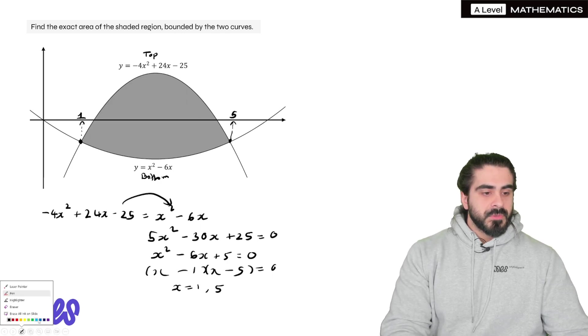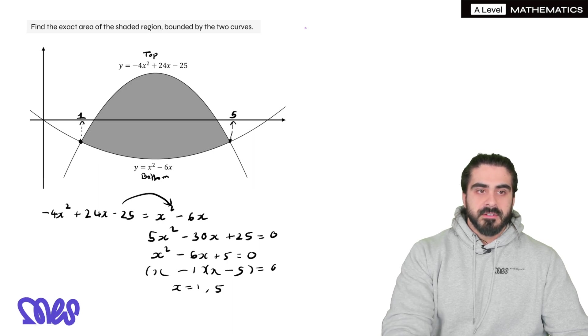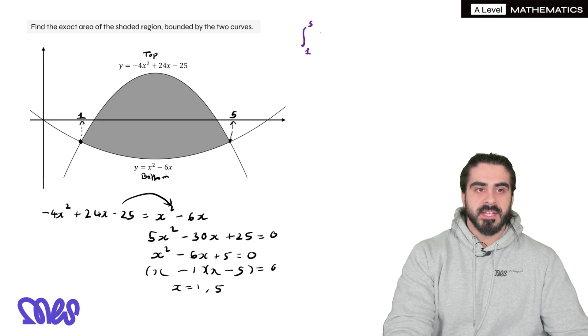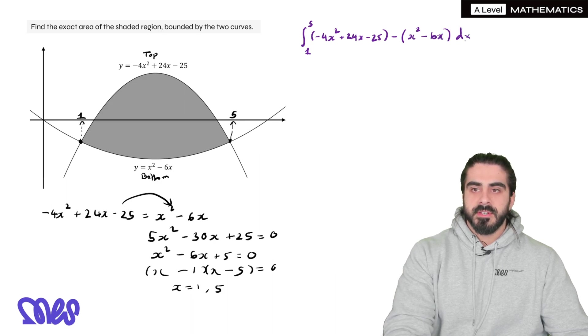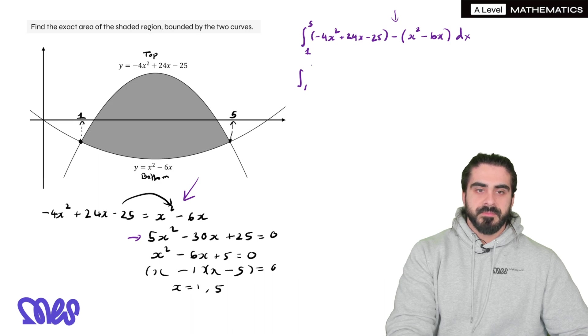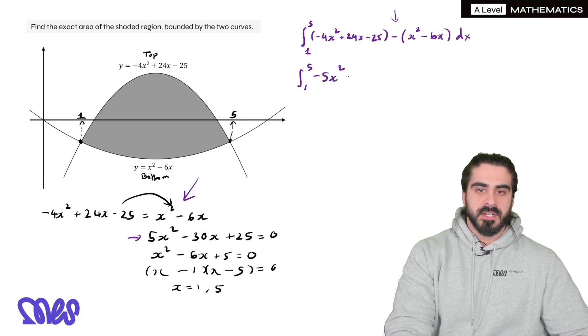Now we are just going to integrate between the limits of intersection of the curve on top minus the curve on the bottom, dx. So we get the negative of this is -5x^2 + 30x - 25 dx.